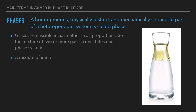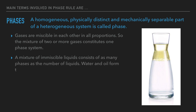A mixture of immiscible liquids consists of as many phases as the number of liquids. Water and oil form a two-phase system. Water, benzene, and mercury form a three-phase system.